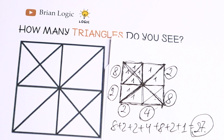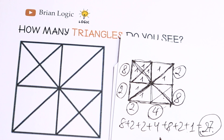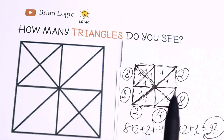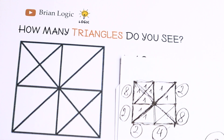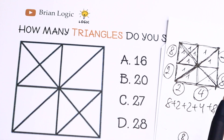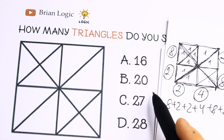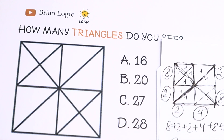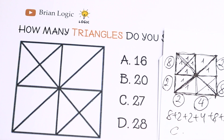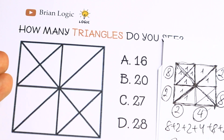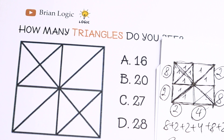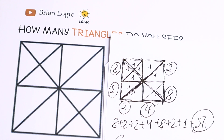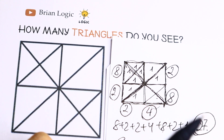I hope your answer is the same. If your answer is not the same, write in the comments how many triangles you counted. My answer is option C — I count 27 triangles. If you count more or less, write your suggestion in the comment. It will be really interesting to read. Thank you so much for watching and see you in the next videos.